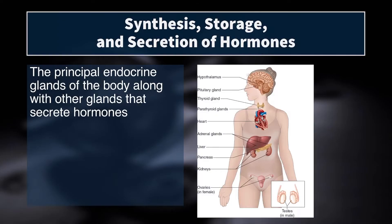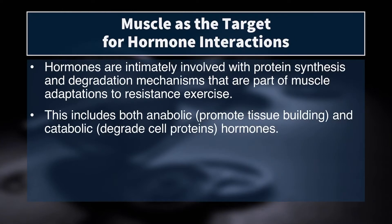Whereas our nerves and certain catecholamines can have very quick and acute effects on tissue, hormones tend to have moderate to longer duration effects on the target tissue. We synthesize, store, and secrete hormones in several different organs — ranging from structures in the brain like the hypothalamus and pituitary gland, down to the thyroid gland, the heart, the adrenal glands, liver, pancreas, kidneys, and the ovaries and testes. So really throughout the body, most of our major organs are secreting, storing, and synthesizing hormones.